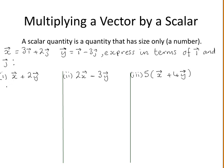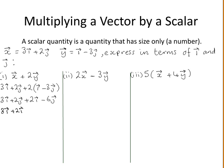The first part is vector x plus twice the vector y. Filling in for vector x and then filling in for vector y, multiplying in by the two — obeying the basic laws of algebra — 2 times 1 is 2i, 2 times minus 3 is minus 6j. Grouping like terms together gives vector x plus 2y equals 5i minus 4j.